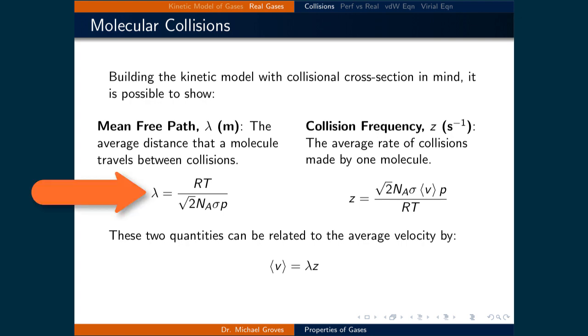It can be calculated by RT all over root 2 times Avogadro's number times the collisional cross section times the pressure of the gas. The collisional frequency is simply the average rate of collisions. It's determined by root 2 times Avogadro's number times the collisional cross section times the average velocity times the pressure of the gas divided by the gas constant times the temperature.